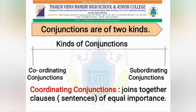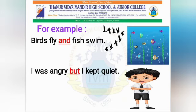Coordinating conjunctions join together clauses or sentences of equal importance. For example: Birds fly and fish swim. Here, 'birds fly' and 'fish swim' are two sentences of equal importance, joined with the conjunction 'and'. Next: I was angry but I kept quiet. Here, 'I was angry' and 'I kept quiet' are two sentences joined with the conjunction 'but'.